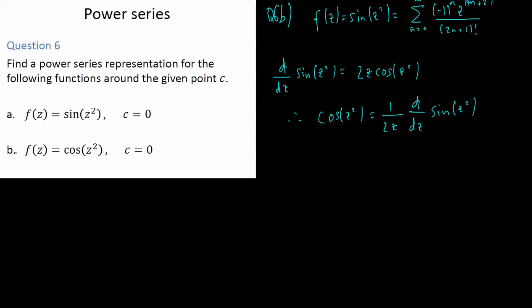Instead of approaching question b in the exact same way as we approach question a, which you could easily replicate using the known power series for cosine of z which is on your formula sheet, we want to approach it in a bit of a different way. d/dz of sin(z²) and, sorry, cos(z²) is equal to 1 over 2z times the derivative of sin(z²).